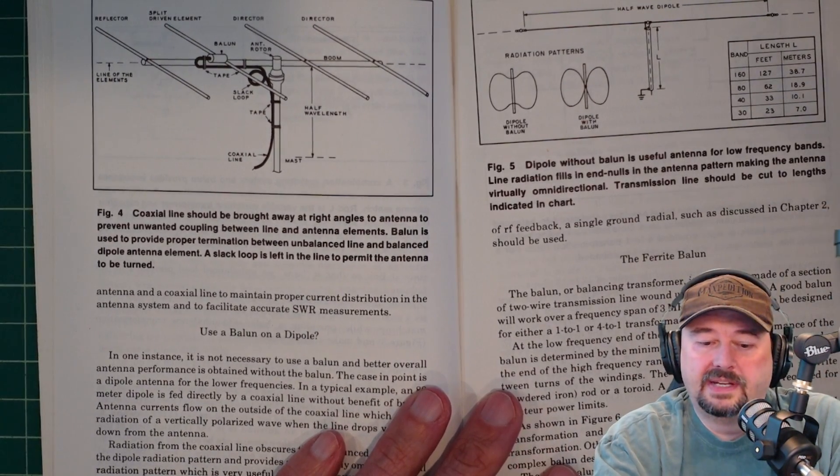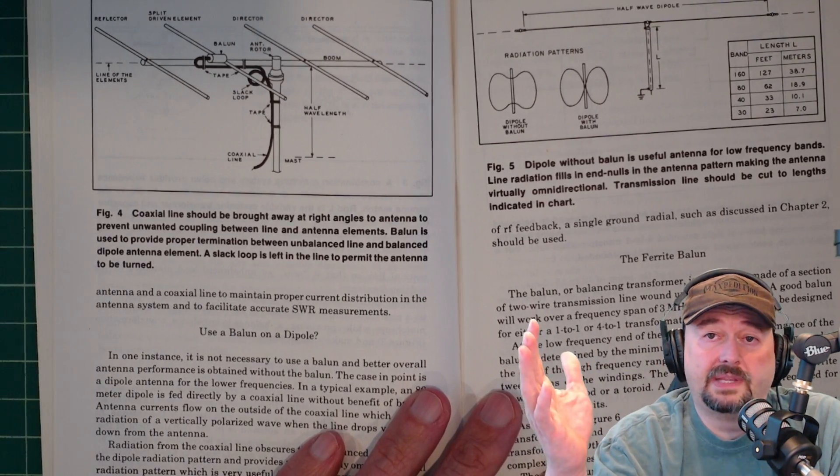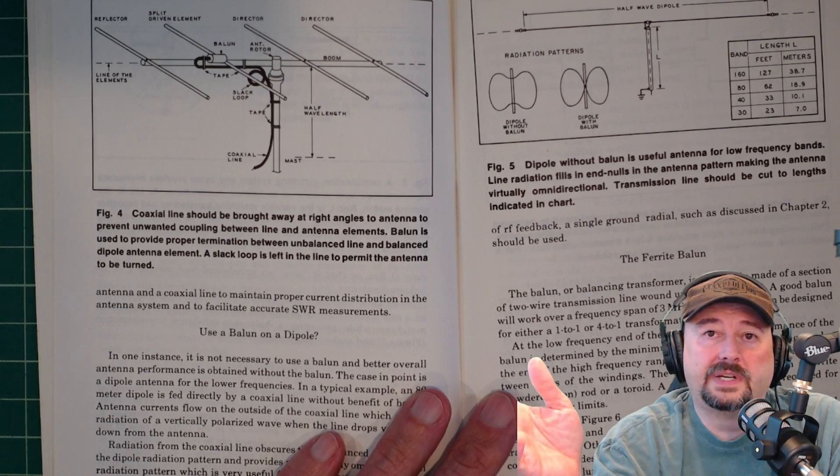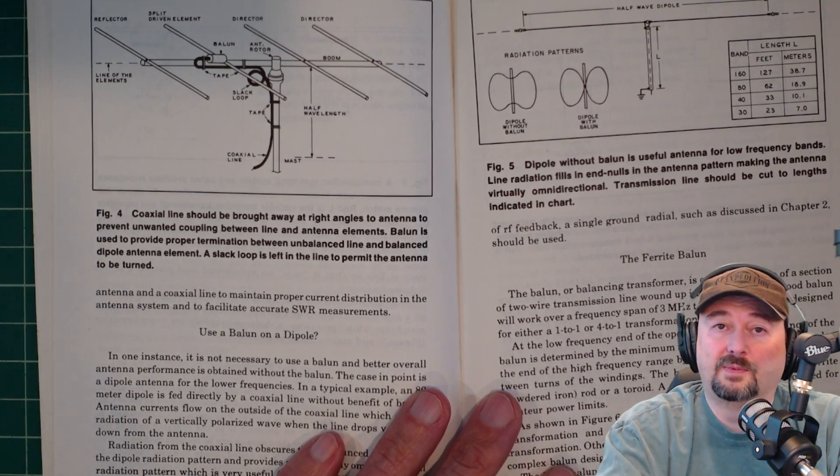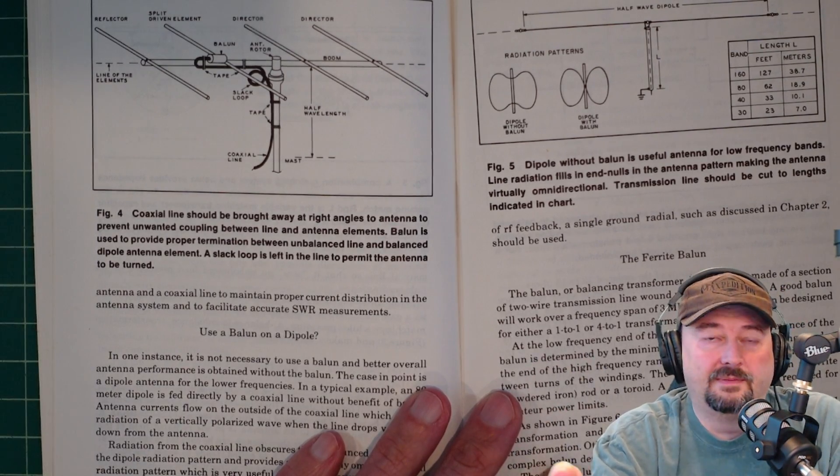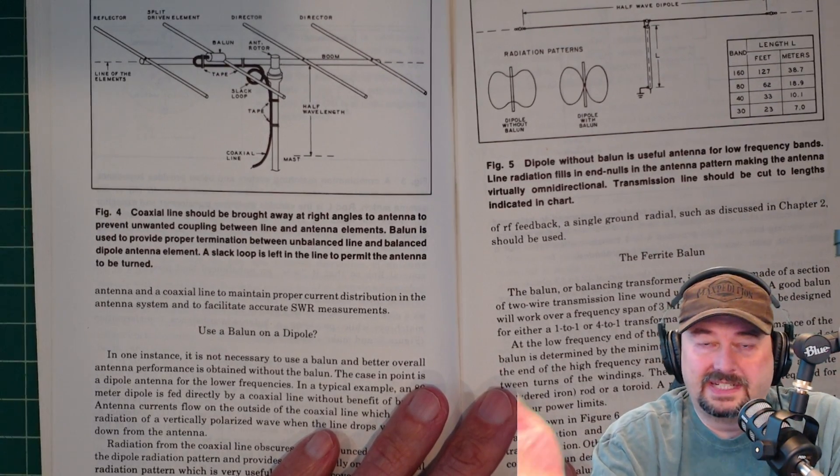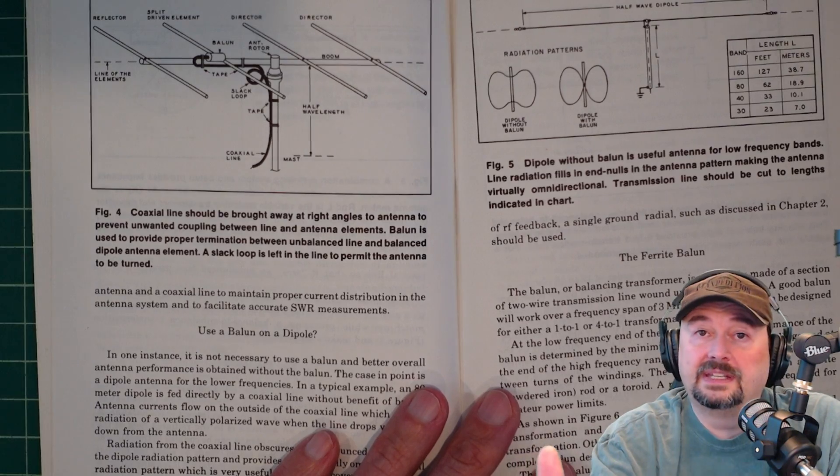And he was saying that he was at some event and they had, I want to say it was a 40-meter, but it might have been an 80-meter dipole. That was very high up in the air, and they just weren't getting their signal out. And what he did is that he got in an argument with his buddy who was there about the balun. He wanted to remove it and see how it was going to work. So he said when the guy wasn't looking, he snuck up there, took the balun out, and all of a sudden the antenna started working.